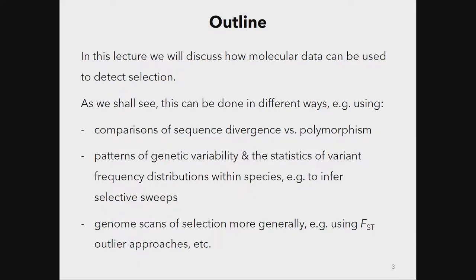The reason we've talked over the last two days about all these measures of genetic variability and genetic differentiation is to prepare us for today: how we can use sequencing data to find signatures of selection. One common approach is comparing sequence divergence between closely related species with polymorphism data from within species — you look at genetic differentiation between species and compare it to the amount of polymorphism within each species. That contains information about selection.